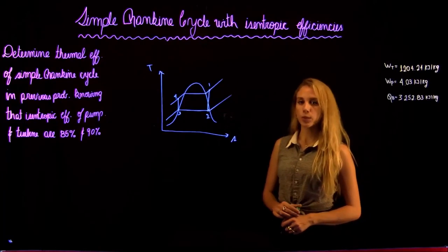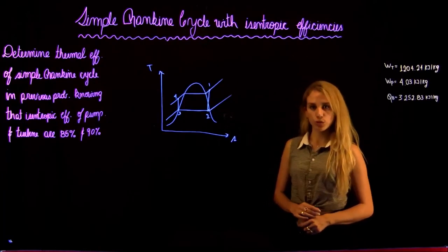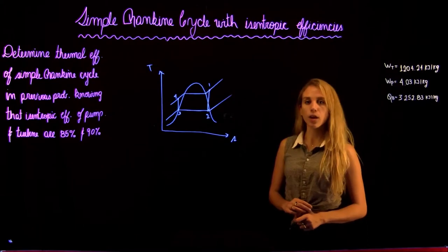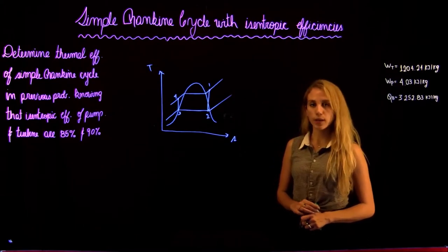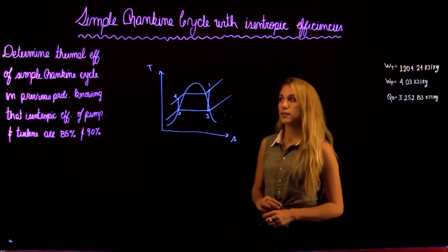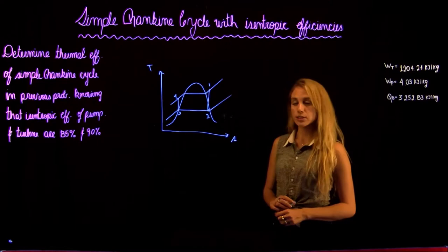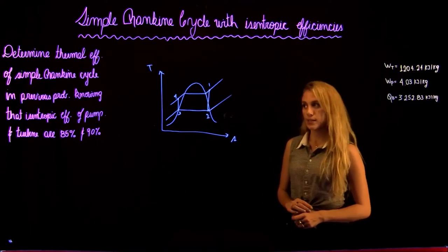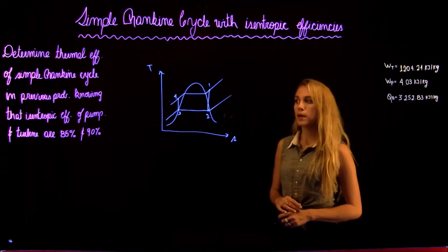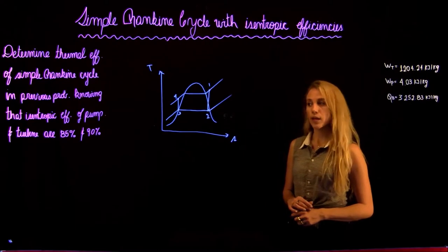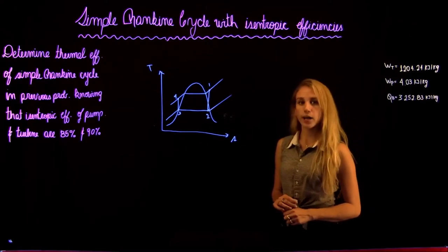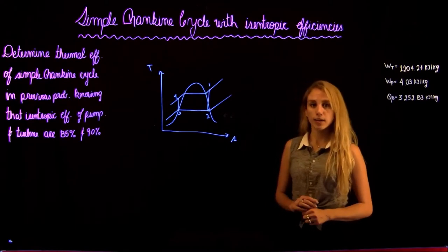Hello and welcome back to Thermodynamics 2 tutorials with Noria. We're going to be solving the second part of the sample Rankine Cycle. We are asked to determine the thermal efficiency of a sample Rankine Cycle from the previous problem, knowing that the isentropic efficiency of the pump and the turbine are 85 and 90%.